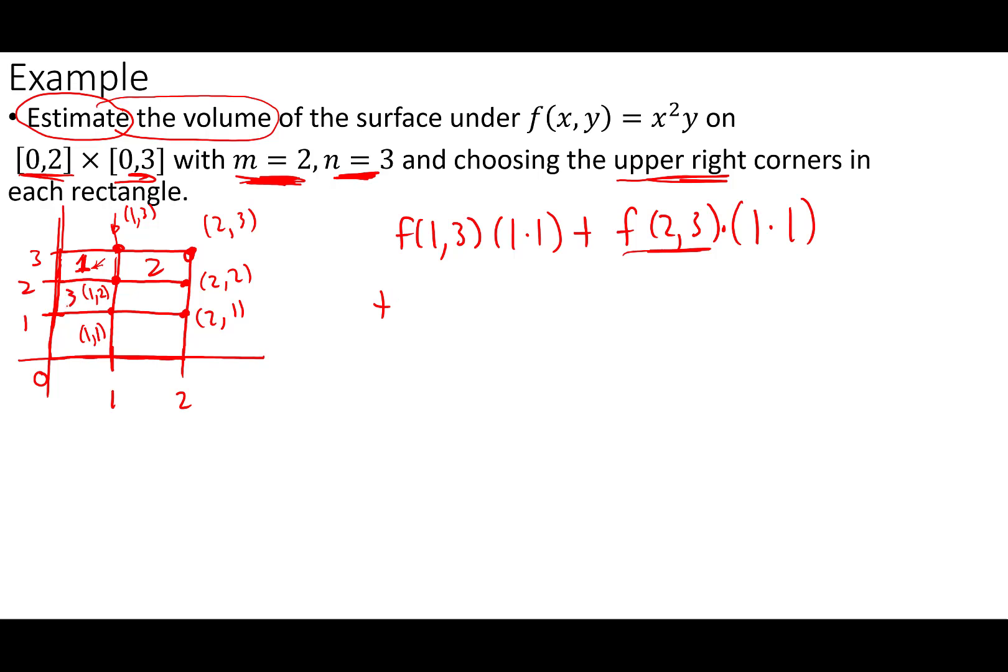Plus this third box here, it's going to be f(1,2) times 1 times 1, plus f(2,2) times 1 times 1, plus f(1,1) times 1 times 1, plus f(2,1) times 1 times 1.